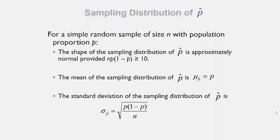Recall for the sampling distribution of p-hat, the sample proportion: for a simple random sample of size n with population proportion p, the shape of the sampling distribution of p-hat is approximately normal. The check you must do is n times p times (1 minus p) must be greater than or equal to 10. The mean is mu sub p-hat equals p, and the standard deviation is sigma p-hat equals the square root of p times (1 minus p) over n.